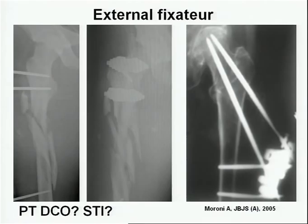External fixation — some authors report quite good results on sub-trochanteric fractures with an external fixator, but it is reserved for special indications like polytrauma, damage control orthopedic surgery, soft tissue infections, or Morel-Lavallée lacerations.